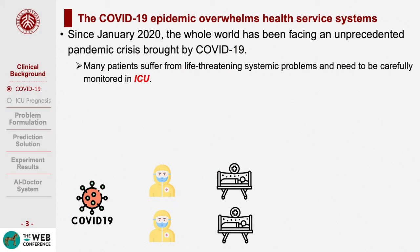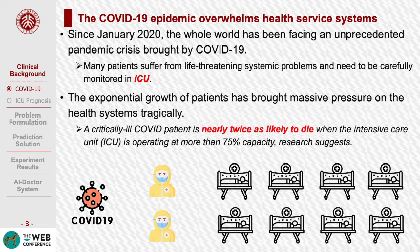Since January 2020, the whole world has been facing a pandemic brought by COVID-19. Many patients suffer from life-threatening systematic problems and need to be carefully monitored in ICU. The growth of patients has brought massive pressure on health systems, overwhelming the National Health Service and exhausting the intensive care units. Research suggests a critically ill patient is nearly twice as likely to die when the ICU is operating at more than 75% capacity.